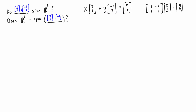From the previous videos, the way we solve something like this is to write it as an augmented matrix. If we can reduce this to reduced row echelon form using elementary row operations and find at least one solution, that means there is at least one solution for any possible target vector (a, b) — which means we can add up some combination of these two vectors to get any vector in R2, meaning they span R2.